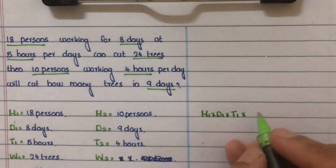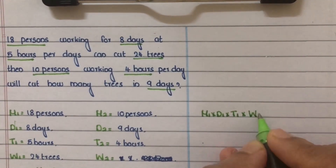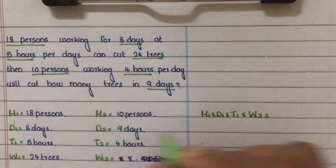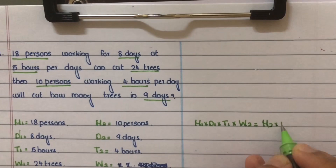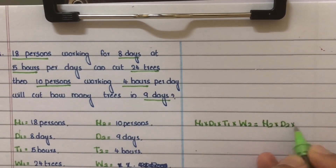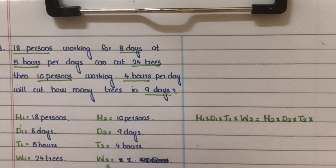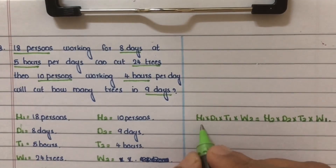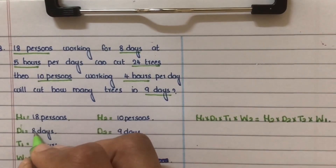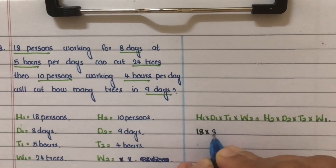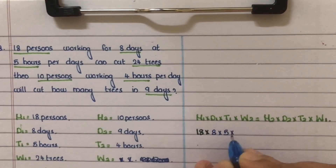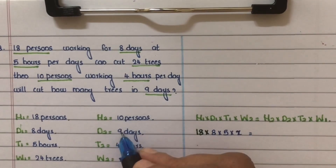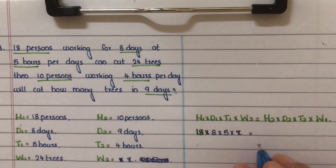This uses the formula M1 × D1 × T1 / W1 = M2 × D2 × T2 / W2. Substituting: 18 × 8 × 5 / 24 = 10 × 9 × 4 / x.